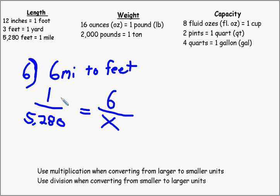Or we can think of it as ratios. We can think of it as cross products. 1 times X should equal 6 times 5,280. And I cheated a little to use my calculator. That is equal to 31,680 feet.